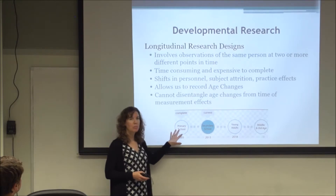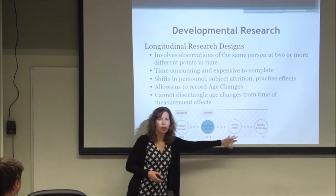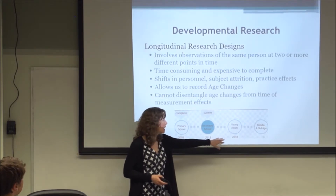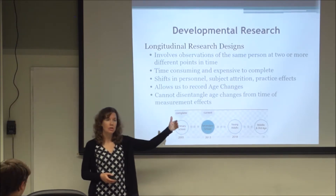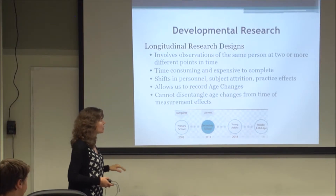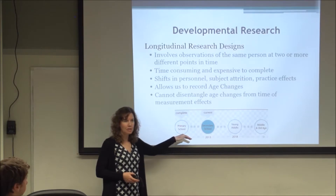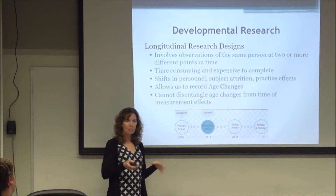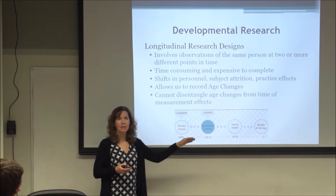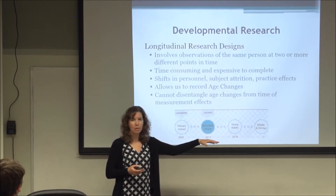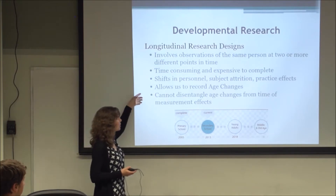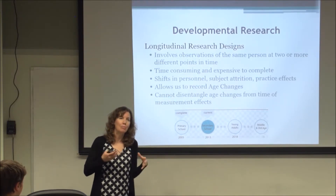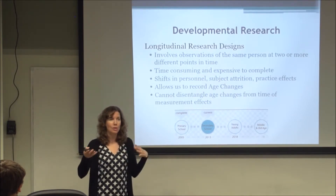Longitudinal design is where we take people and follow those same people over time. For example, in 2005 we tested people in primary school; now we test them in secondary school, then as young adults and middle-aged adults. We have some people we've been following longitudinally for five years who have been living in smart apartments. This research takes a long time — if I want to see whether teaching middle-aged adults to be healthier decreases their risk of Alzheimer's later, I'd have to follow them for a very long time. Additionally, changes in personnel can affect the reliability of your measures if two administrators are doing things a little differently.